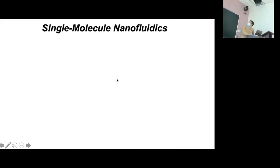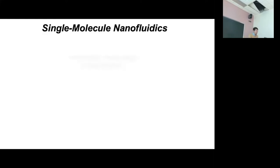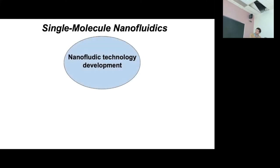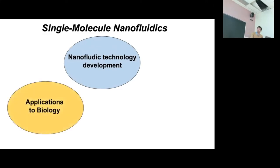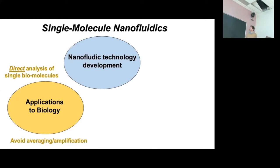To give a brief overview, what my group does is we build nanofluidic devices to analyze single molecules. These are devices which consist of nanopores and nanochannels with dimensions between one to several hundred nanometers. My group has three different objectives: we develop new types of nanofluidic devices and nanofabrication technologies, and we apply these technologies to applications in biology, particularly direct analysis of single biomolecules.